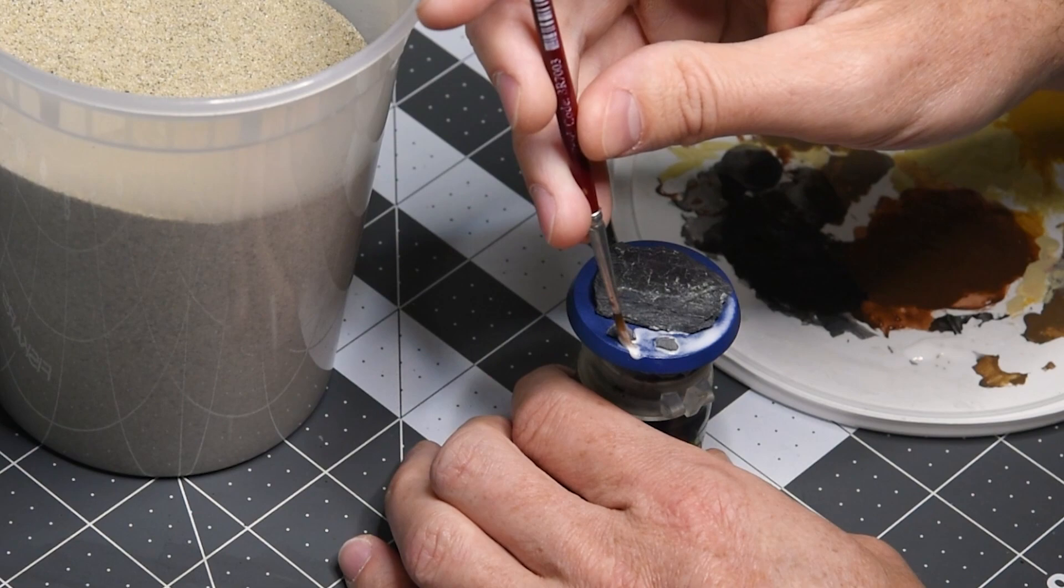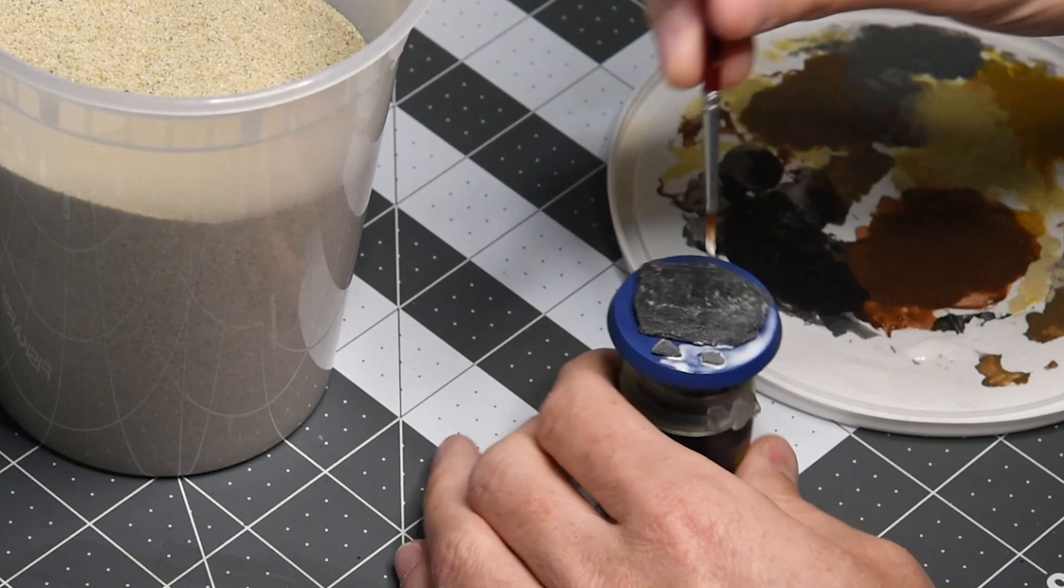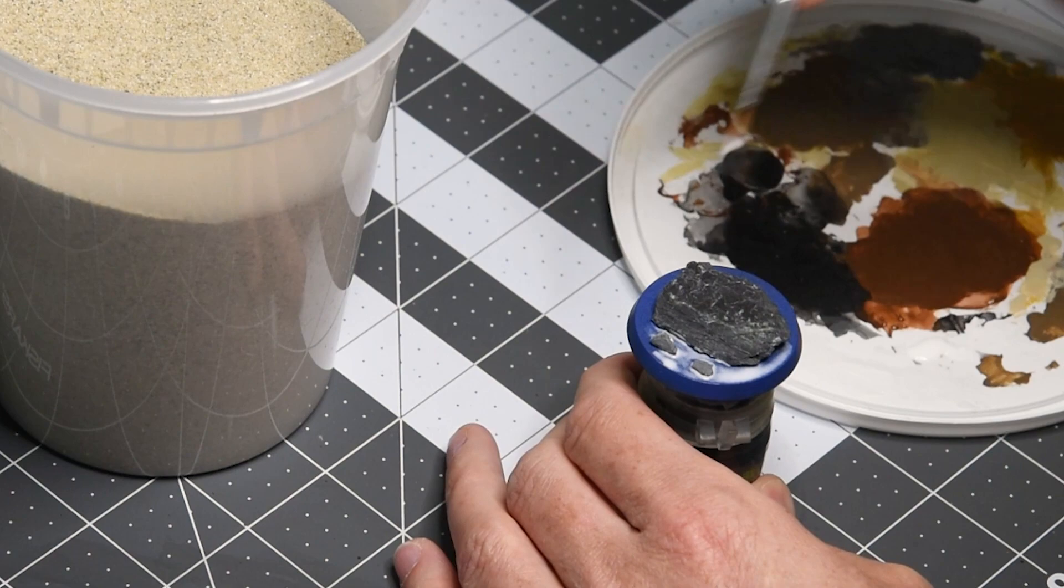And we use the primer in the same way we use it for any of our painting. It helps the material stick to the plastic. So we definitely want to prime it before we start our basing techniques here.